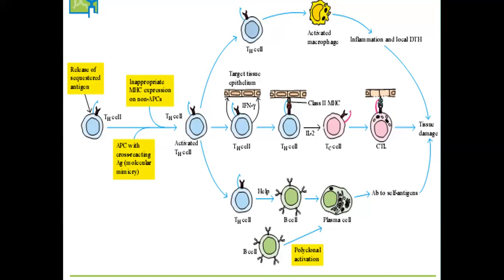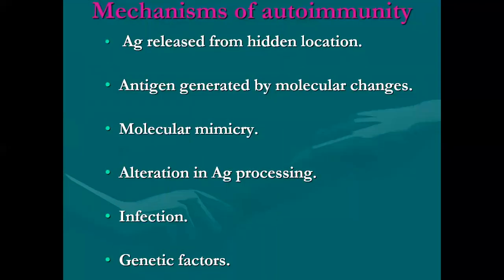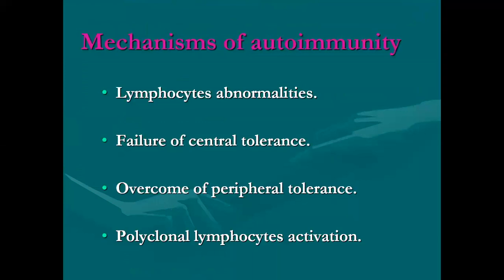Those are the three pathways by which autoimmune disease comes about. The mechanisms include antigen release from immune-privileged sites, antigen generated by molecular change and molecular mimicry, alteration in antigen processing, infection, and genetic factors. There are also lymphocyte abnormalities: failure of central tolerance, overcome by peripheral tolerance, and polyclonal lymphocyte activation.